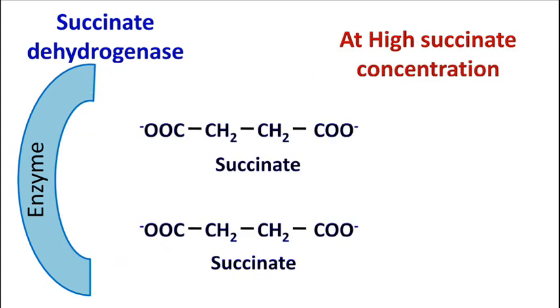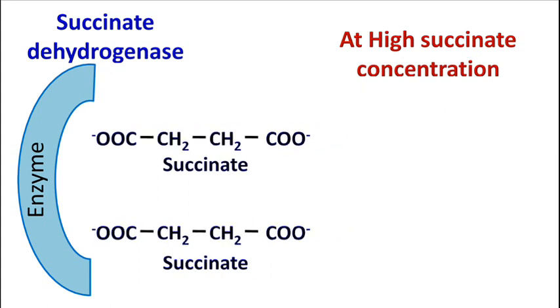At high concentration, because the number of succinate molecules is high, the carboxyl group of a different succinate molecule reacts at the active site. This results in an unreactive complex, and the enzyme gets inhibited.